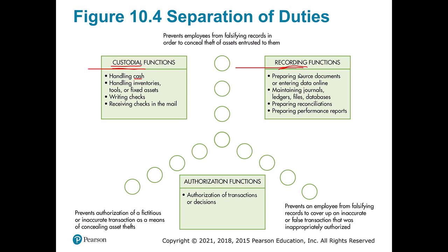Thinking back to the revenue cycle, when customers send checks, the remittance process has two people present: one with the custodial function and one with the recording function. The remittance advice goes to recording and the check goes to custodial — two separate departments. Authorization is the third role: someone should have to sign the check or finally approve an item, and that should be a different person than those who have the cash or record the activity. For example, someone writes a check and the CFO provides the final signature.